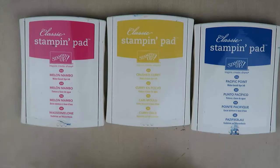I'm using our primary colors: mellow mumbo, crushed curry, and Pacific Point. To start with, I'm going to be putting my crushed curry all over my craft mat that I have here. Now if you don't have a craft mat, a thick piece of plastic or a piece of acetate will work well.